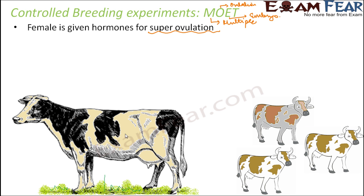As a result, the female will release those many eggs and they will get fertilized. The fertilization can either happen naturally by interaction between the female cow and the male bull, or it can happen by artificial insemination where the semen is injected into the female's body. All eight eggs will get fertilized. Once fertilized, the egg undergoes repeated division — four cell, eight cell, 32 cell stage. When it reaches the 16 to 32 cell stage, it is taken out of the female's body and transferred to different females.